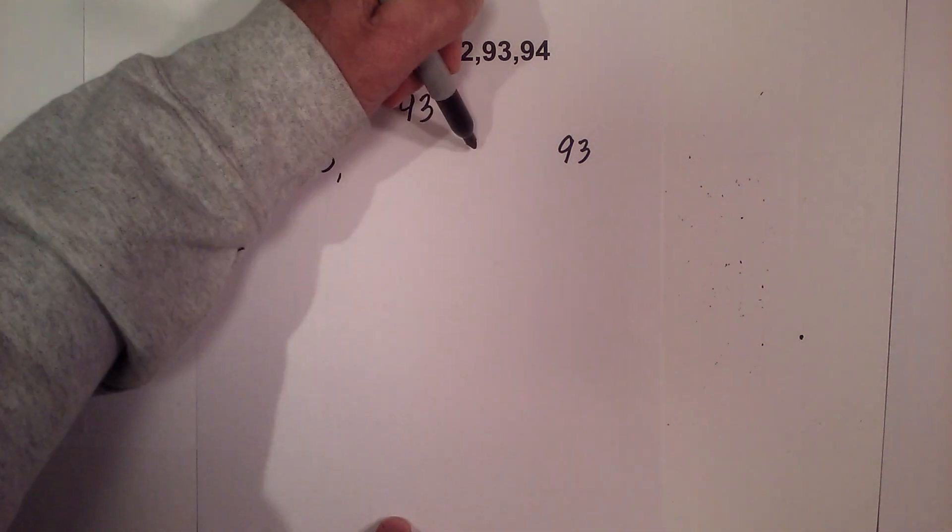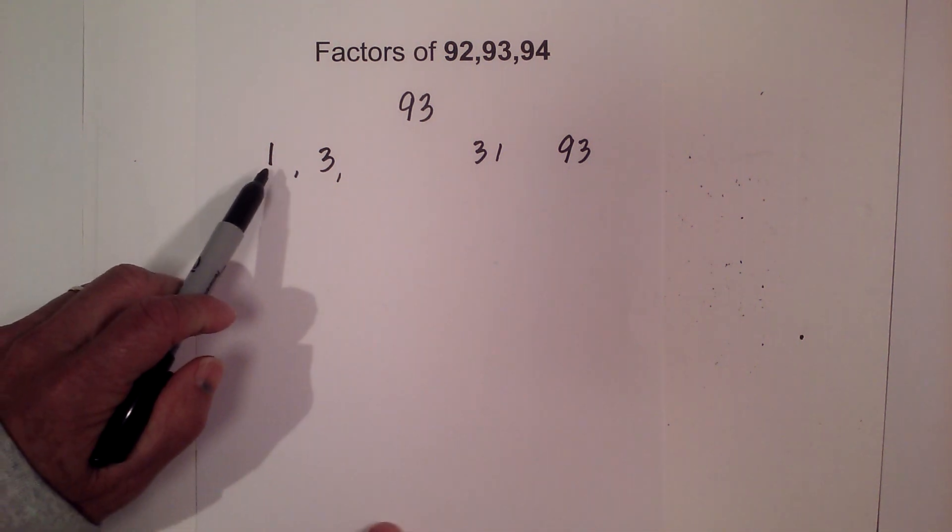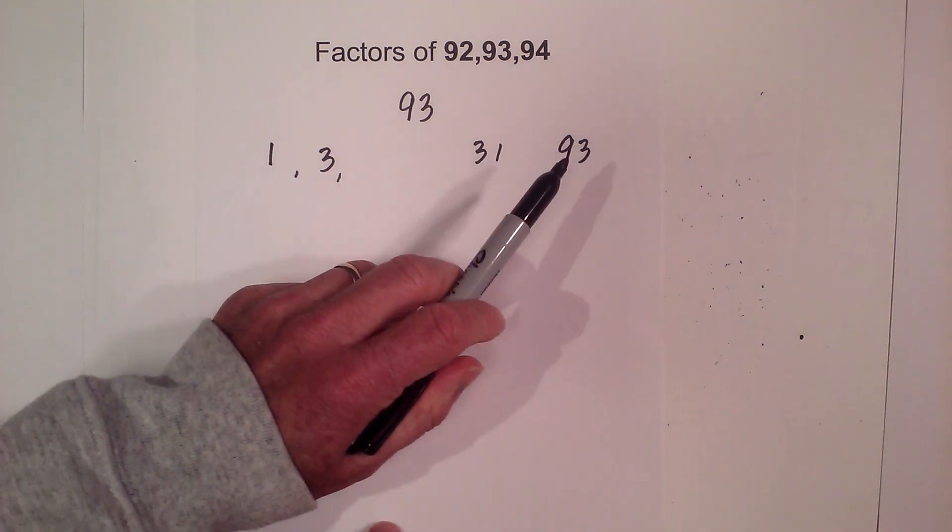But 3 will go into 93, 31 times. So the factors of 93 are 1, 3, 31, and 93.